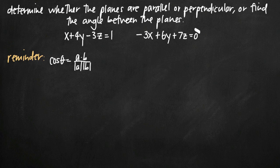The easiest way to go about this is to test first for parallel, then if not parallel, perpendicular, and then if not perpendicular, to find the angle between the planes. So we want to test for parallel first.